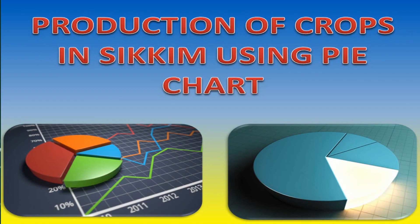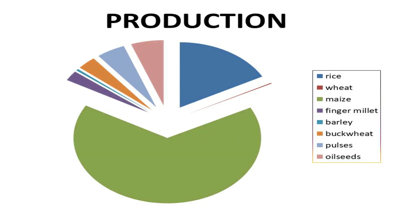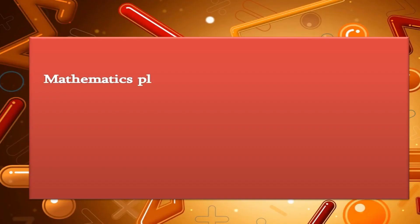Production of crops in Sikkim using a pie chart. Let us see the production of different crops grown in Sikkim such as rice, wheat, maize, finger millet, barley, buckwheat, pulses, and oilseeds in the year 2017 and 2018. In this pie chart, the production of maize is higher than the other crops, and the production of wheat is less than the other crops.